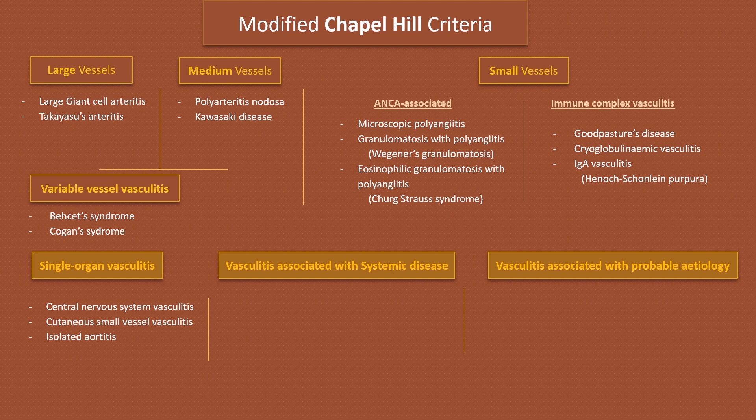The next category in the classification is vasculitis associated with systemic disease. Subsets of patients with systemic lupus erythematosus, rheumatoid arthritis, relapsing polychondritis, and other systemic rheumatic diseases may develop associated vasculitis. The vasculitis process in this setting most frequently involves small muscular arteries, arterioles, and venules.